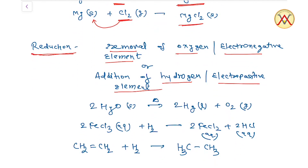For Example, HgO को heat करेंगे तो Hg + O₂ मिलता है - यानि यह हुआ Removal of Oxygen, इसलिए यह Reduction है। Second Example: FeCl₃ + H₂ की reaction में FeCl₂ और HCl बनते हैं - यह हो गया Addition of Hydrogen।